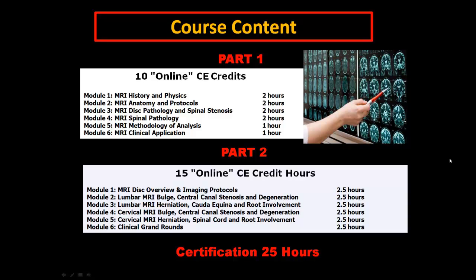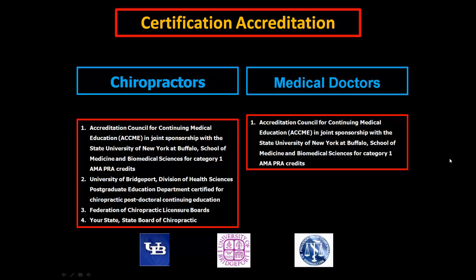You will learn how to understand and interpret MRI, and that's the key. The program is certified — if you're a chiropractor, it's by the State University of New York at Buffalo School of Medicine for Category 1 AMA PRA credits, the University of Bridgeport Division of Health Science Postgraduate Education Department for Chiropractic Postdoctoral Training, the Federation of Chiropractic Licensing Boards, and your State Board of Chiropractic. If you're a medical doctor, you don't need state-by-state approvals — it's simply the ACCME and joint sponsorship with the State University of New York at Buffalo School of Medicine and Biomedical Sciences for Category 1 AMA PRA credits.